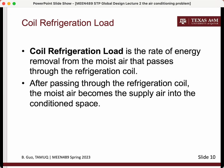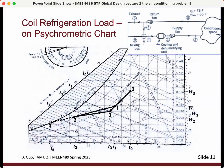The return air leaves the conditioned space and enters the cooling equipment, which contains a coil through which a cold fluid flows, and heat transfer removes heat from the air. The cooling equipment cools the return air plus some fresh air to produce the supply air. The coil refrigeration load is usually greater than the cooling load because of the need to cool fresh air from the ambient environment. The coil refrigeration load concept is shown on a psychrometric chart, where point zero (coil) is the condition of fresh air from the ambient and point three is the condition of return air from the conditioned space.